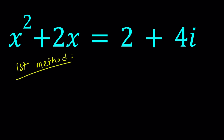For my first method, since this is quadratic, I'm going to collect everything on the same side and then use the quadratic formula. So x squared plus 2x, and then I'm going to subtract 2 plus 4i — subtract the whole thing as an entity — and set it equal to 0.